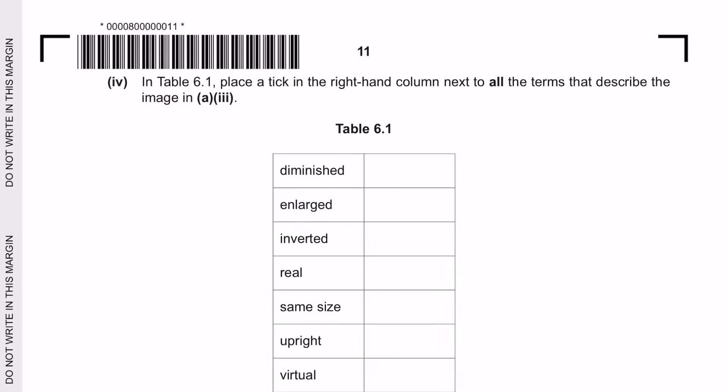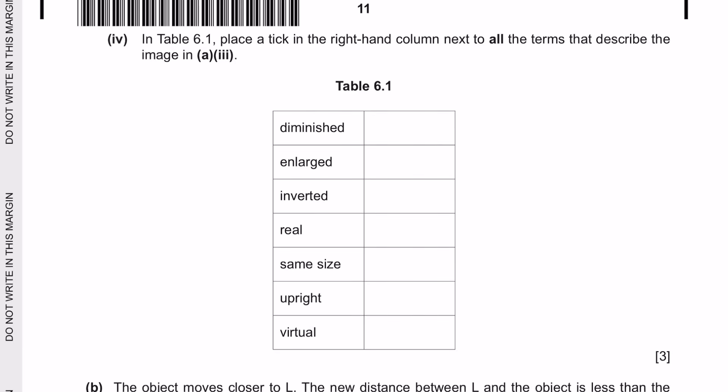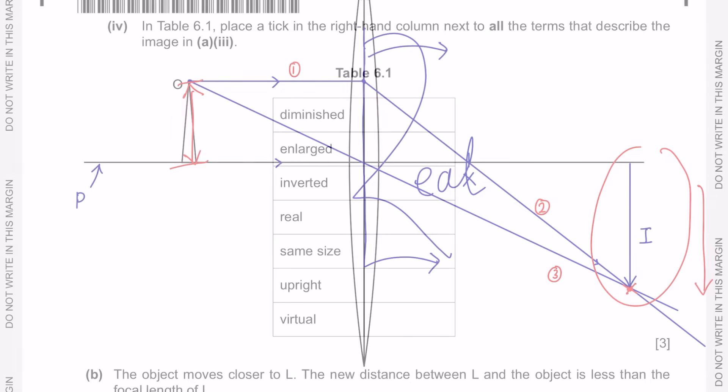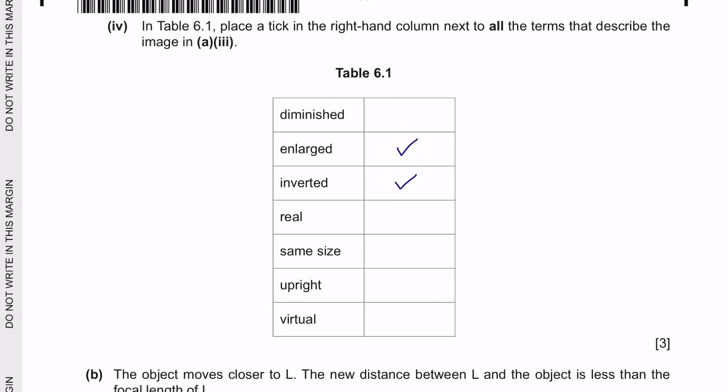Next question part 4. In table 6.1, place a tick in the right-hand column next to all the terms that describe the image in A part 3. So as we can see here, the image is inverted as the tip points to the bottom. It's larger than the object, so it's enlarged. And since it falls on the right side of the lens, that would be drawing the letter R, you would get real. It can help you to identify that everything on your right is real. So enlarged, inverted, and real.